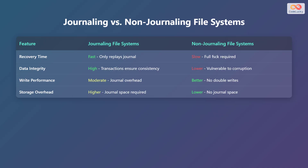Let's compare journaling and non-journaling file systems. When it comes to recovery time, journaling file systems are fast, only replaying the journal, whereas non-journaling file systems are slow, requiring a full file system check. In terms of data integrity, journaling file systems offer high integrity through transactions, while non-journaling file systems have lower integrity and are more vulnerable to corruption. For write performance, journaling file systems have moderate performance due to the journal overhead, while non-journaling file systems have better performance with no double writes.